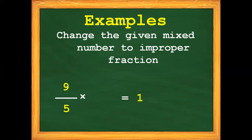To make this statement true, we need to multiply the first given fraction — which is 9 fifths — with its reciprocal. The reciprocal of 9 fifths is 5 ninths. So 9 fifths times 5 ninths, and the product is 1.